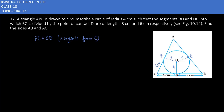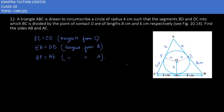FC is equal to CD because they are tangents from point C. Then we have EB equal to DB, which will be 8 centimeters — tangents from point B. Similarly, AF and AE will be equal because they are meeting at one external point, that is A — tangents from A.